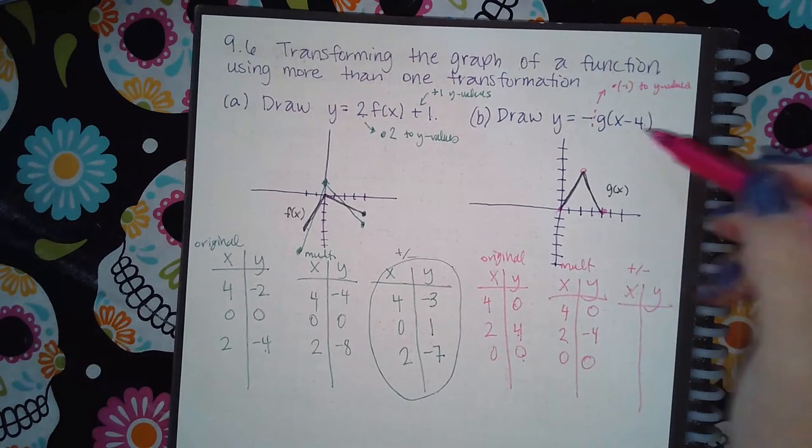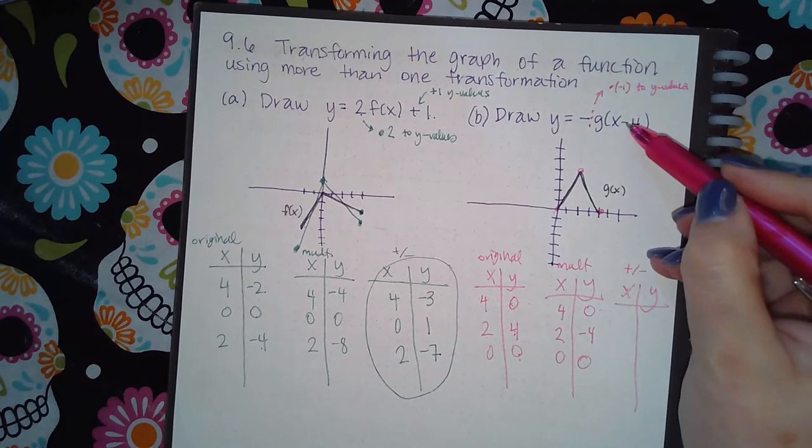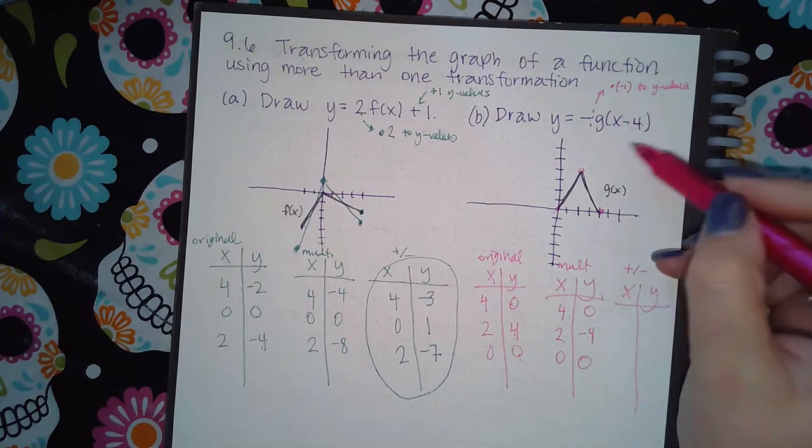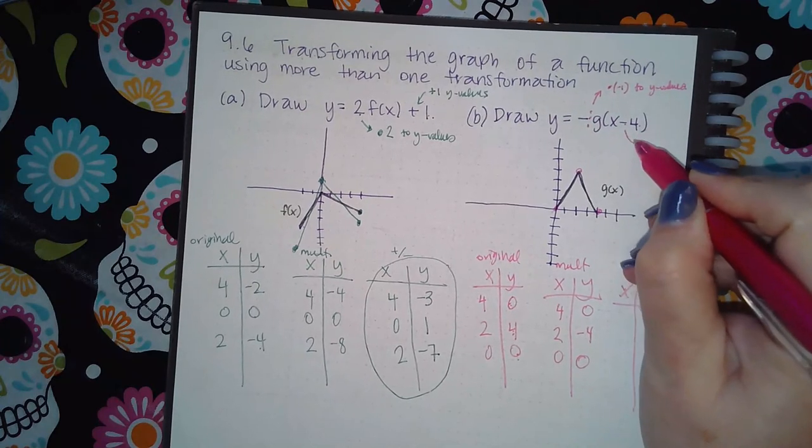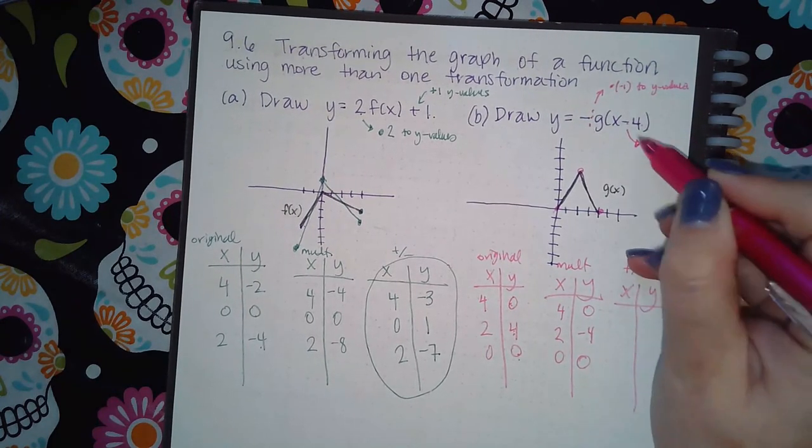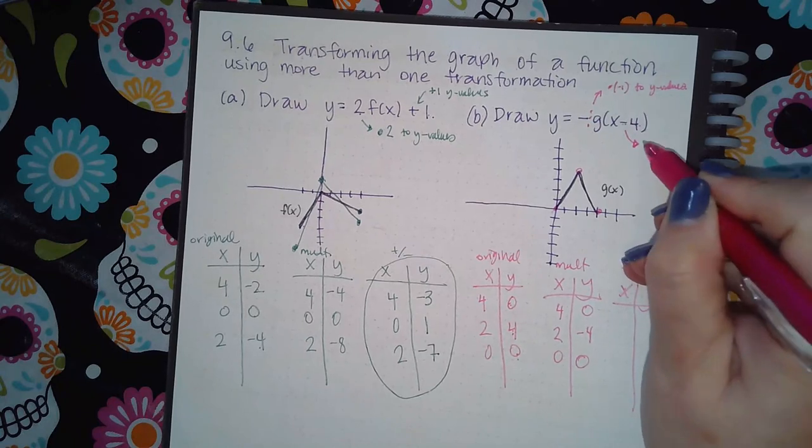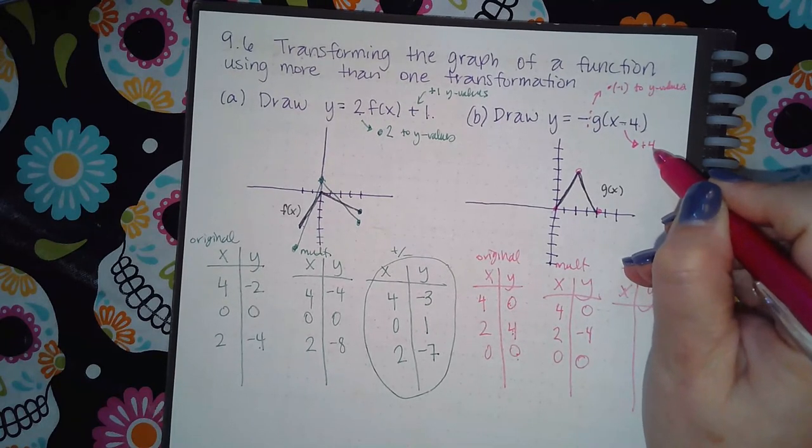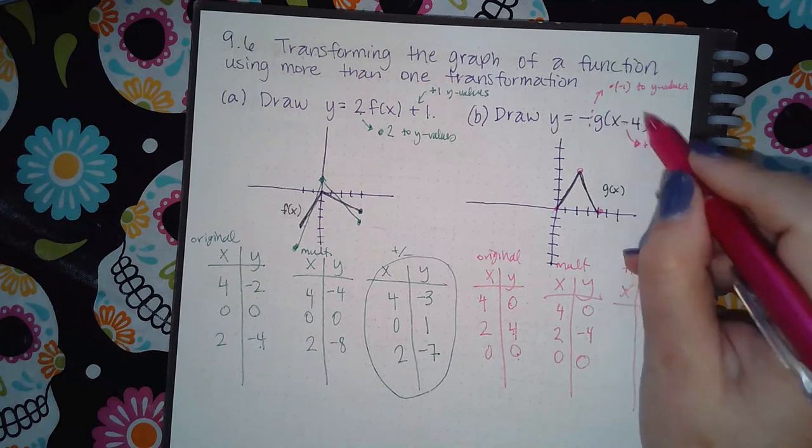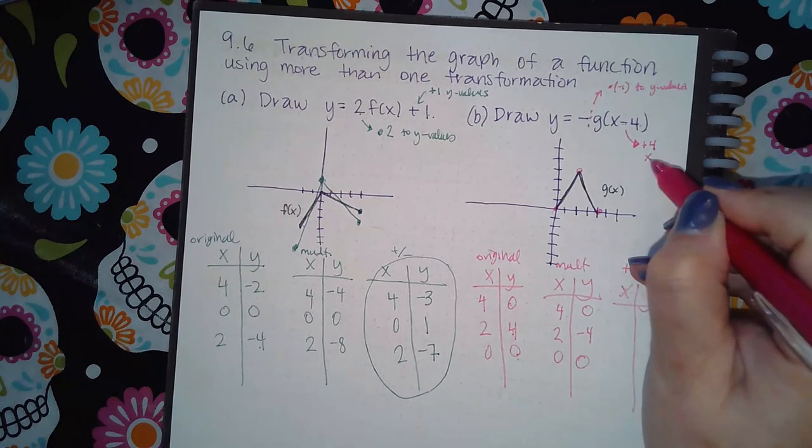Now here, the adding and subtracting is a subtraction, and it's happening inside the parentheses. So we know that when it's happening inside the parentheses, you do the opposite. So instead of minus four, we're actually going to add four. Not only that, but when it's on the inside, it happens to the x values.